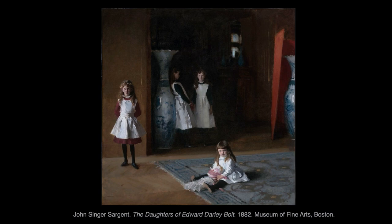Artists have done this for centuries. In this example, Sargent compressed the scene range down by many stops. The window incident on the daughters in the foreground and the urn on the right would probably have been about a thousand times brighter than those in the shadow. Yet the painting conveys the scene beautifully in a medium that only holds about a hundred-to-one range.